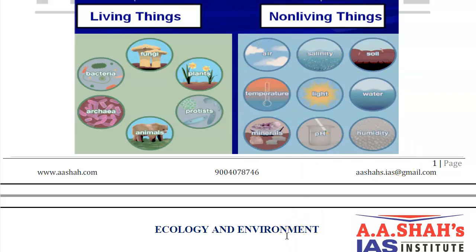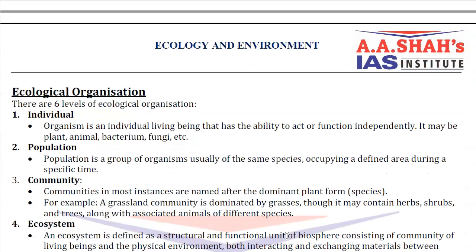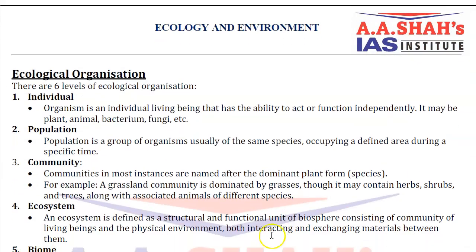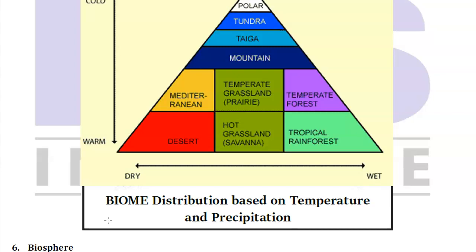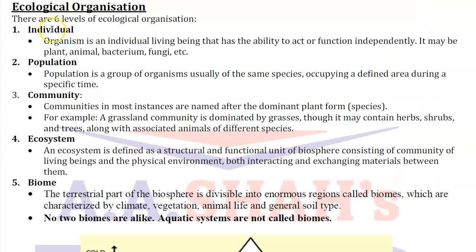Now we come to our next topic: ecological organization. You should know that there are six levels of ecological organization, starting from an individual organism to finally the biosphere. The first and lowest level is an individual organism. Population is a group of organisms. Community is a group of different forms of organisms - for example, in a grassland community there will be grass, trees, and some animals living there.